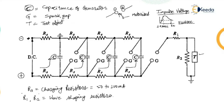When the impulse generator is to be discharged, the gaps G are made to spark over simultaneously by some external means or by adjusting the gap between the two electrodes. During charging, the capacitors get connected in parallel. While discharging, the gap between the electrodes is adjusted either manually or by motorized means so that the capacitors start discharging.